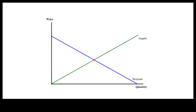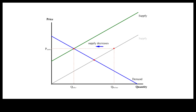When less is supplied at the same price, supply rather than quantity supplied is said to have decreased. With demand remaining unchanged, a decrease in supply will push up price. After the market clears, a smaller quantity is sold at a higher price when supply decreases.